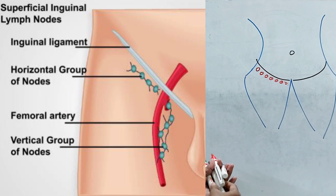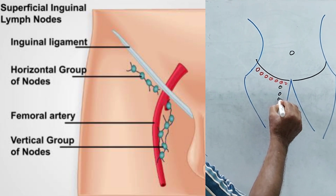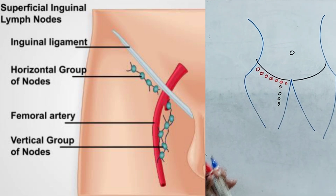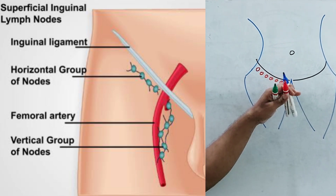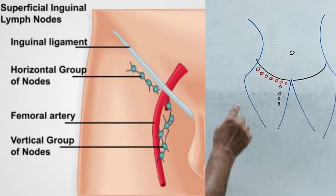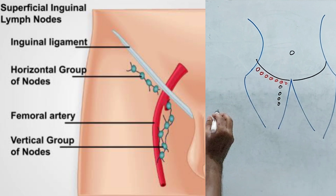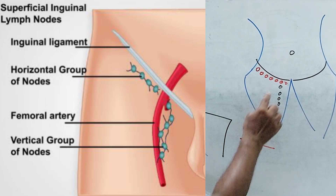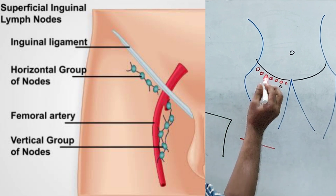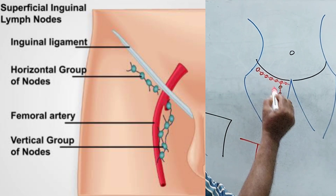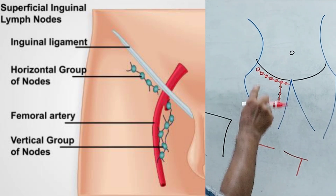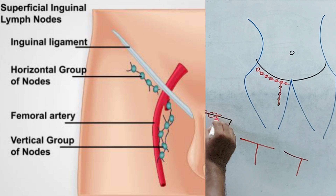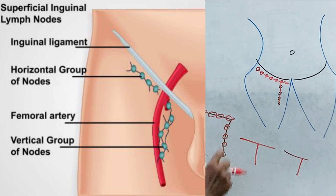These are the vertical group of lymph nodes. The number of the horizontal group is about 5 to 6, and the vertical group is about 4 to 5. The shape of this arrangement looks like an inverted L — or in some cases it may be a T shape — with one line here and another line there. So this is either a T shape or an inverted L shape arrangement of the superficial group.